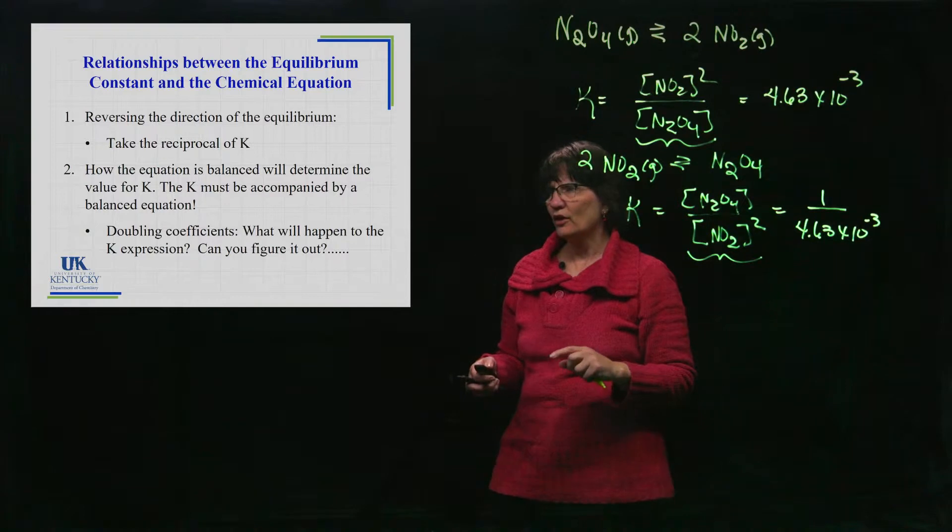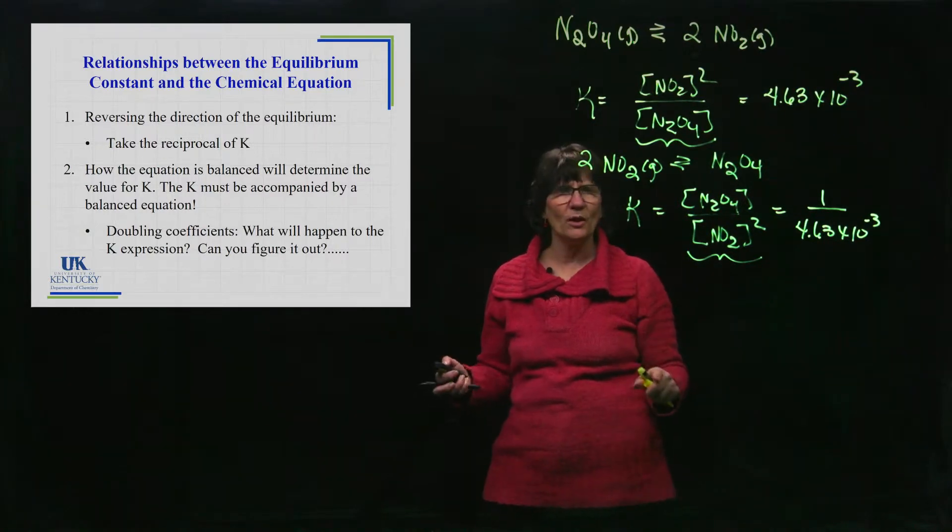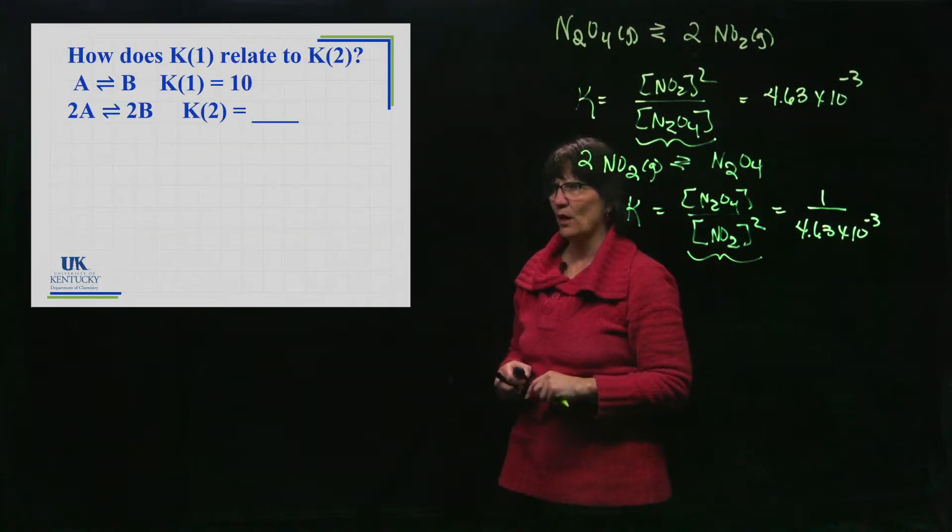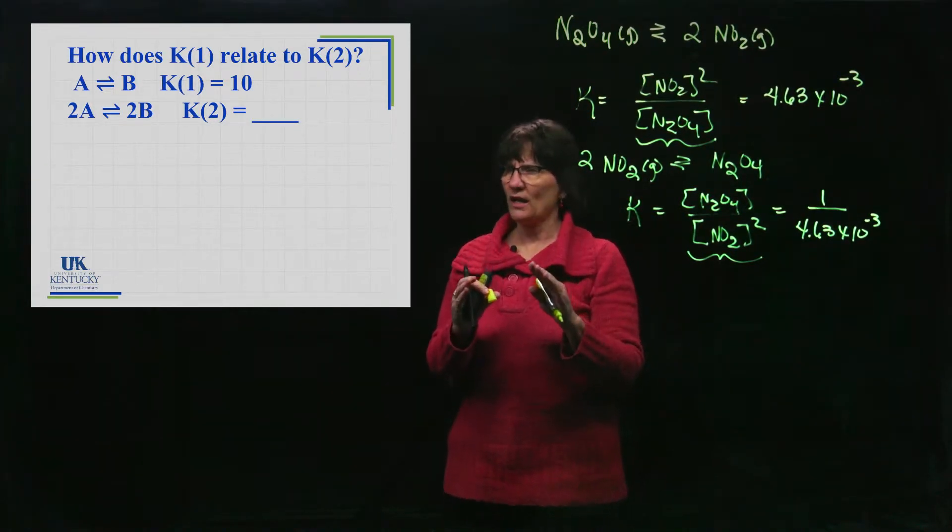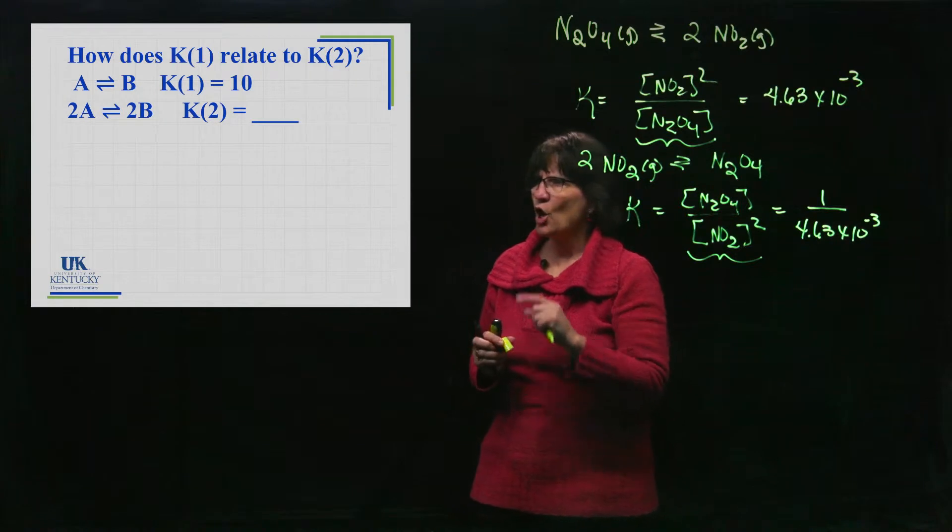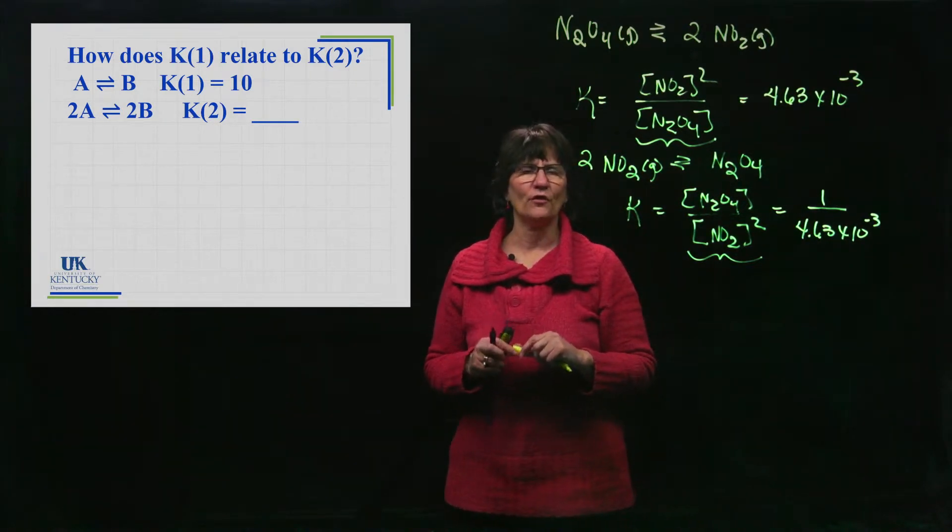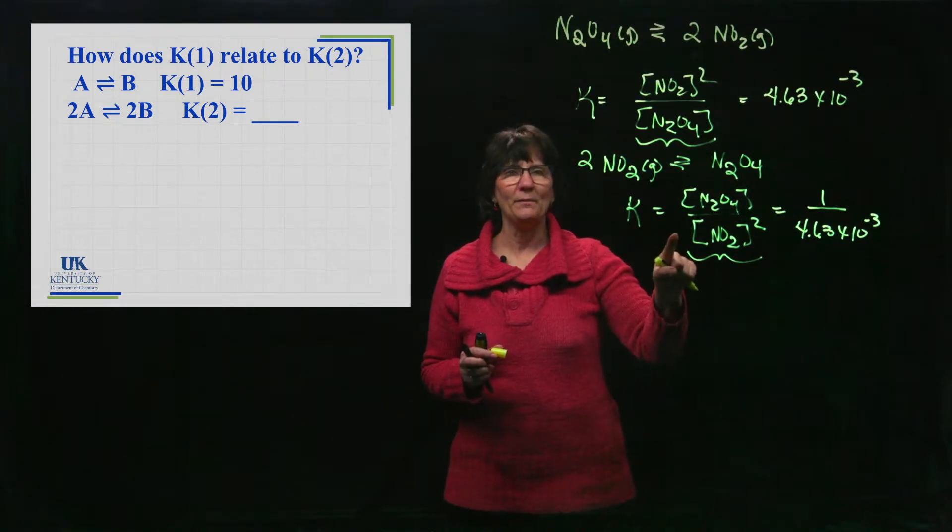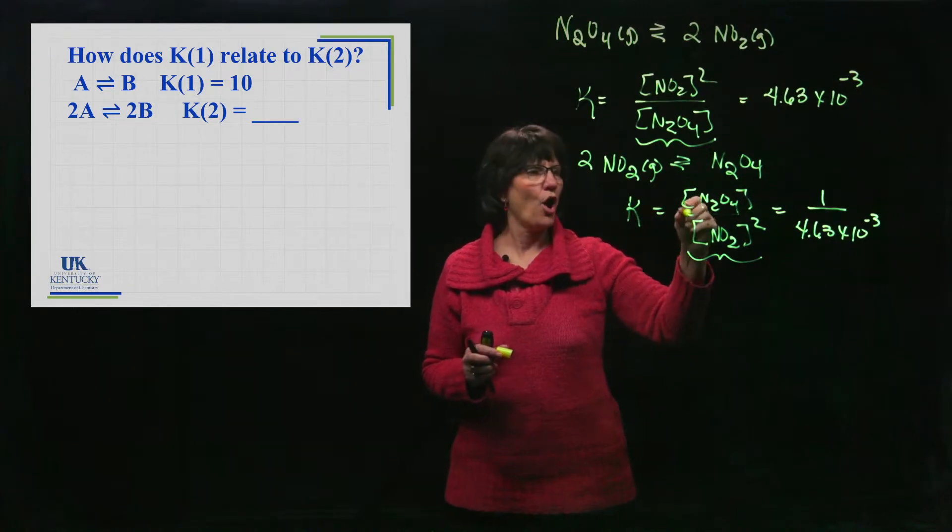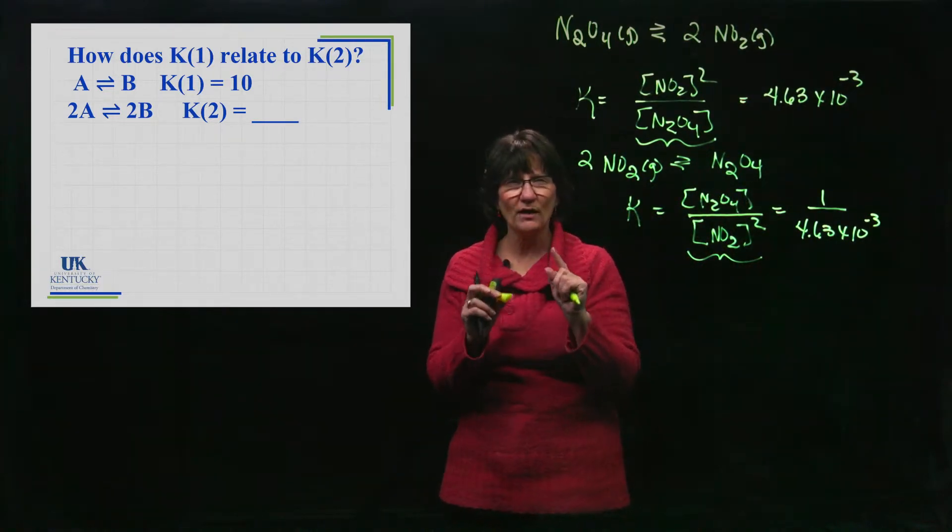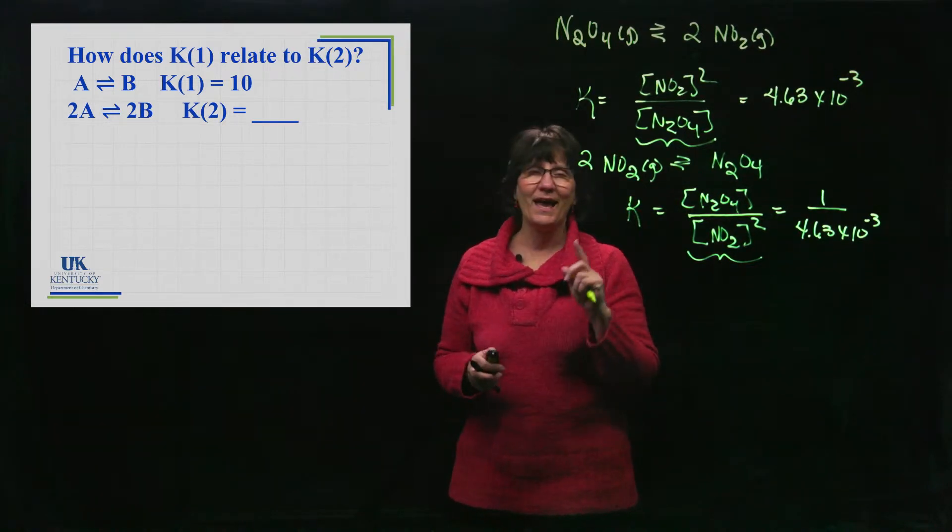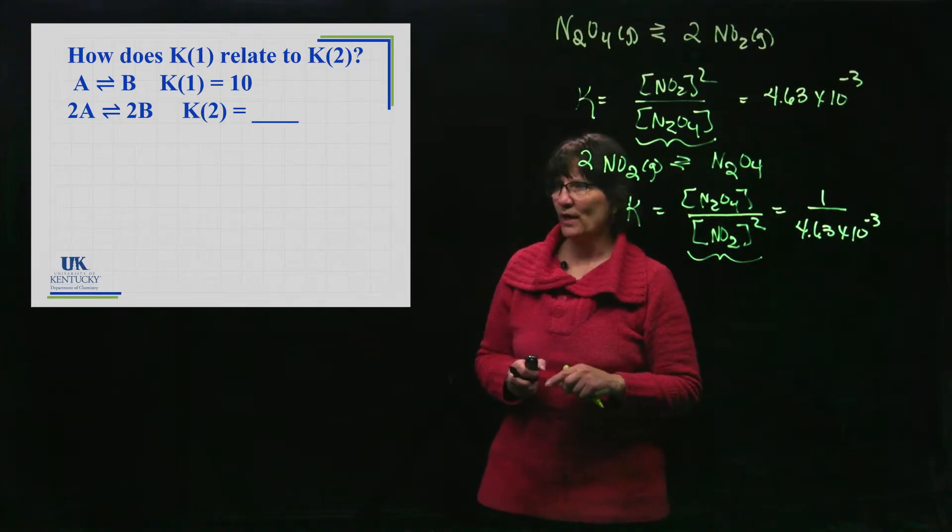So doubling the coefficients is going to do something to your K. Let's look at this example. I want you to think about it. You're going to stop it and try to come up with an answer, but let me give you this hint. Write the K expression for both of those first. Products over reactants raised to the power of their coefficients. Do that for each of those reactions first and then establish your answer.